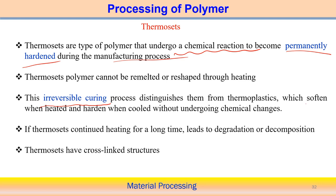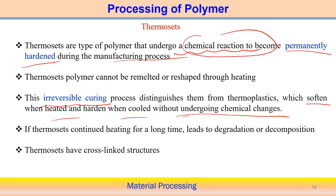With thermoplastics, the material is softened by heating and hardens when cooled, without undergoing much chemical change. But with thermosets, during heating a significant chemical reaction occurs, creating cross-links. If thermosets are heated for a longer time, degradation or decomposition easily occurs. Due to this cross-link structure, thermosets behave quite differently compared to thermoplastics.